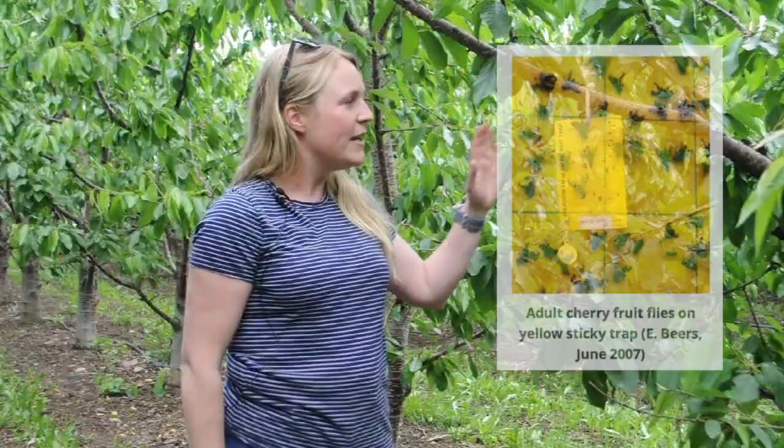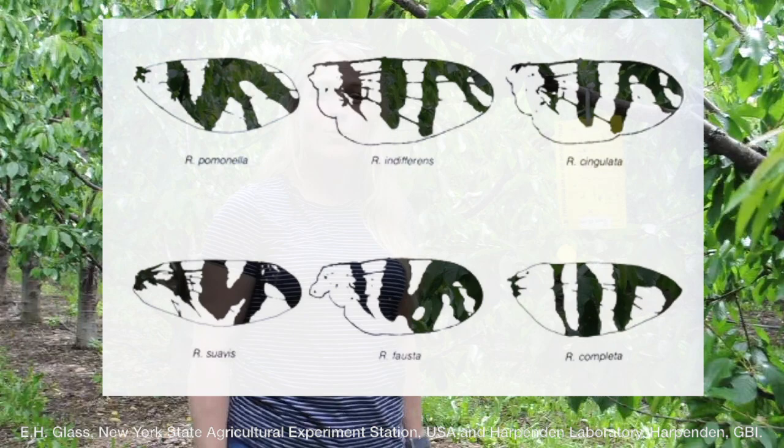It's important to note that a number of different Rhagoletis species can be caught on the traps, and so you need to refer to the wing pattern in order to properly identify the Western cherry fruit fly as opposed to other Rhagoletis species. We'll show you an image of the various wing patterns in order to help in your identification.